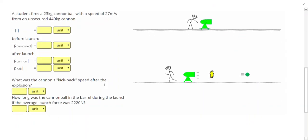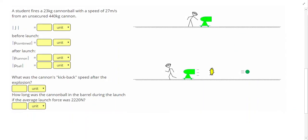Let's take a look at one more problem. A student fires a 23 kilogram cannonball with a speed of 27 meters per second from an unsecured 440 kilogram cannon. Let's set this problem up by underneath each green object writing momentum, velocity, and mass. We see the student, but the student was not part of our explosion. The hint is the student's not in green, so they're not part of our system. I'm referring to the cannon and the cannonball.